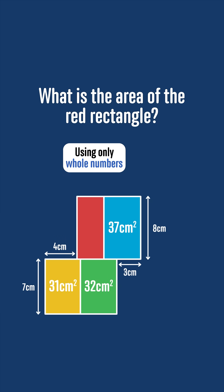We'll start by noticing that 31 plus 32 is 63, and whilst 31 and 32 are not multiples of 7, 63 is. So the rectangle formed from combining the yellow and green rectangles has area 63.